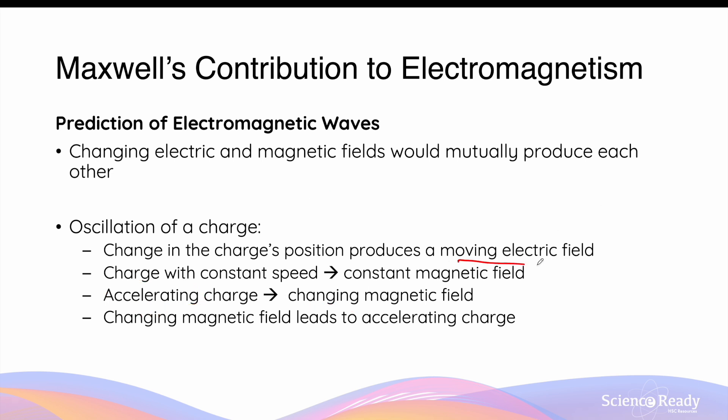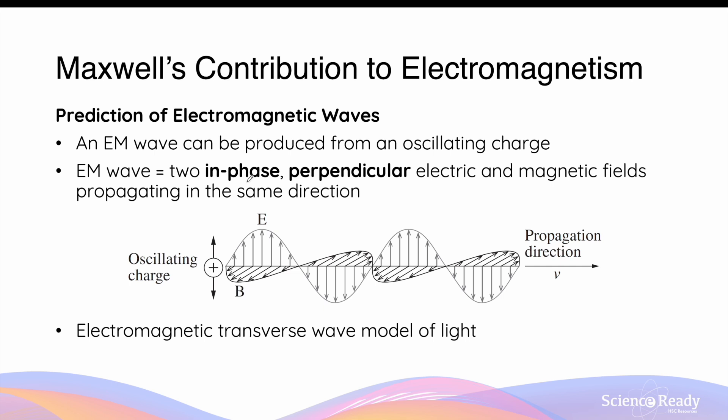The moving electric field will produce a changing magnetic field if the charge has acceleration. And by Faraday's law, the changing magnetic field will then feed back and produce a moving electric field. Maxwell said that when such an oscillating charge is fired in a certain direction, it will carry the associated electric field and magnetic field with it, leading to the production of what we now understand as electromagnetic wave.